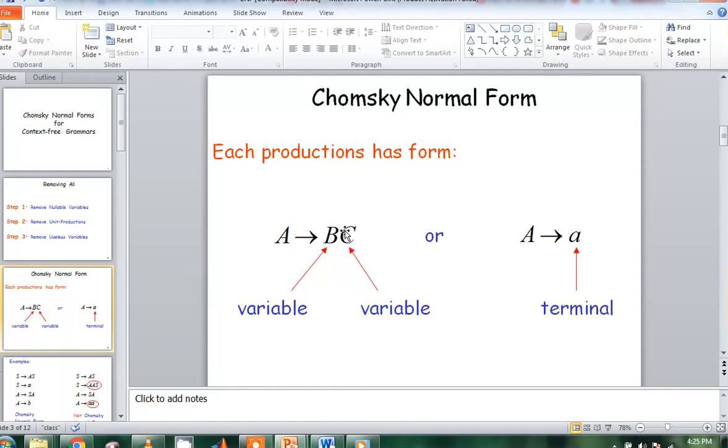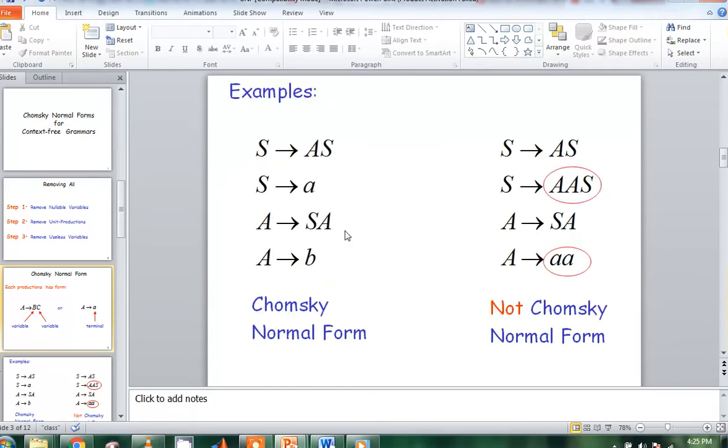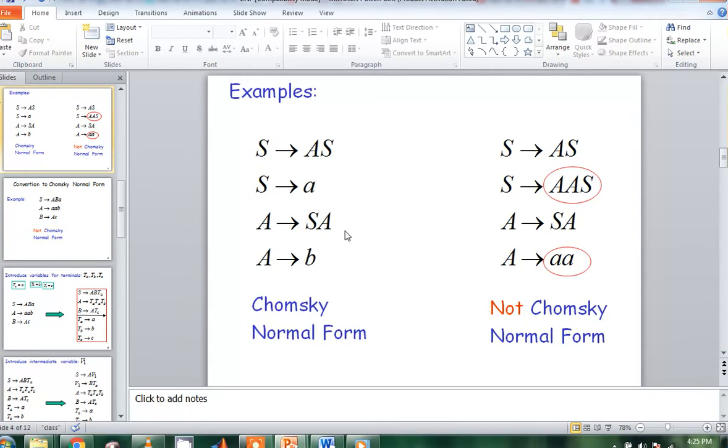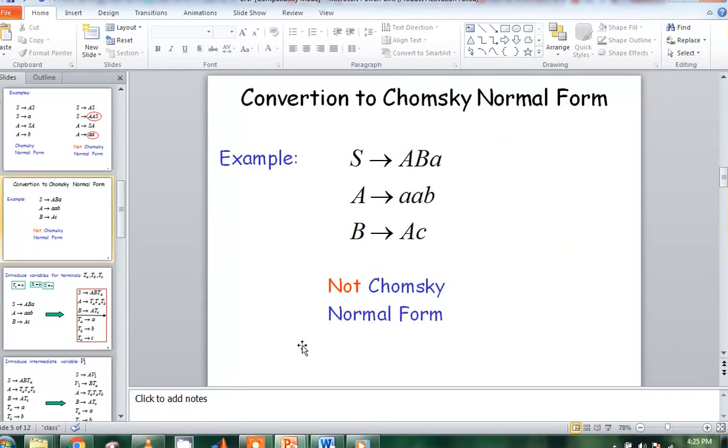If these variables are single, we must remove one instead of converting to non-variable form. This is one variable here, this is two variables. This is Chomsky Normal Form.